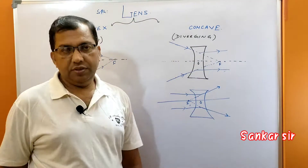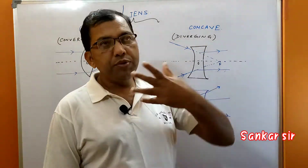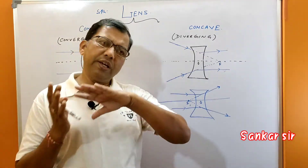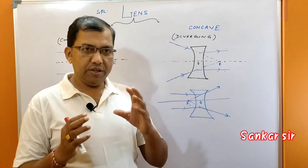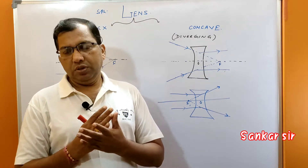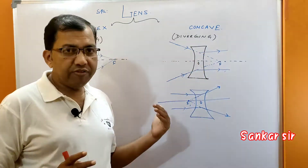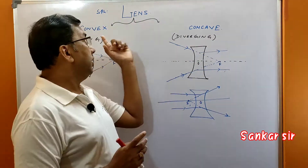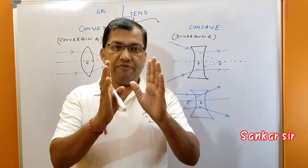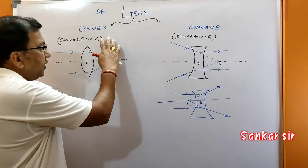So what is a lens? A spherical lens — I have discussed what the function of a mirror is: conveyor. Same thing, a little bit different. A lens is a transparent medium bounded by two refracting surfaces. A mirror is a reflecting surface on one side. A lens is a transparent medium bounded by two refracting surfaces. It is of two types: one is convex lens, another is concave lens.